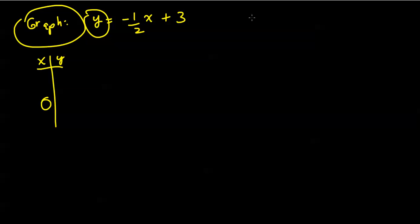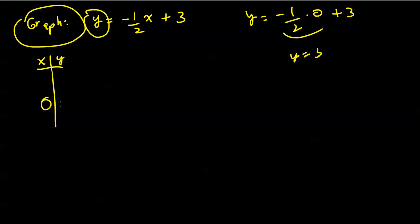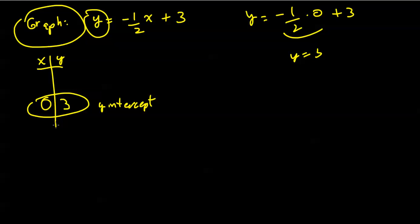If x = 0, then y = −½ times 0 plus 3, so y = 3. There's a special name for this point — I'm calling this the y-intercept. Anytime your x-coordinate is 0, you are on the y-axis somewhere, hence the name y-intercept.